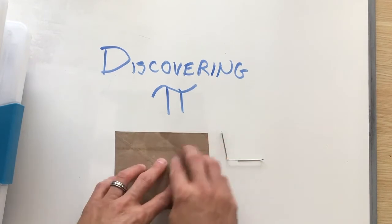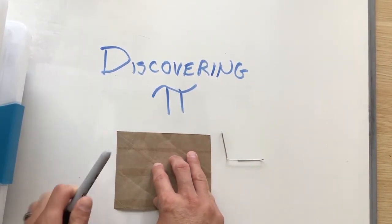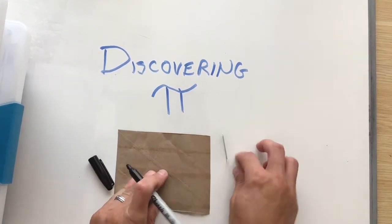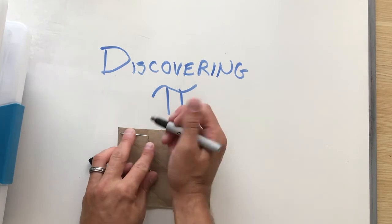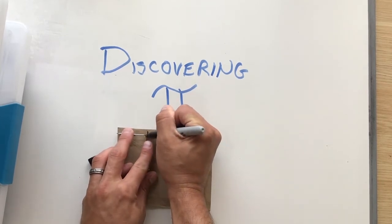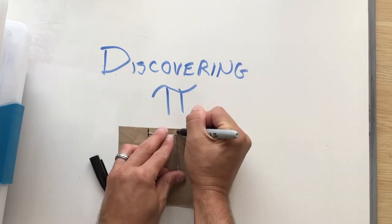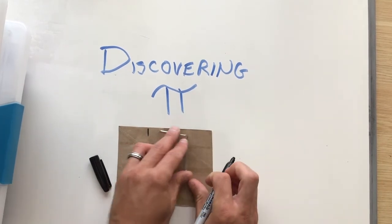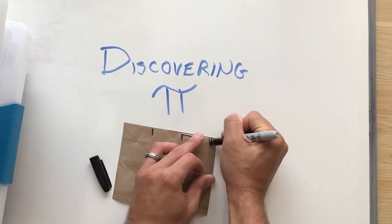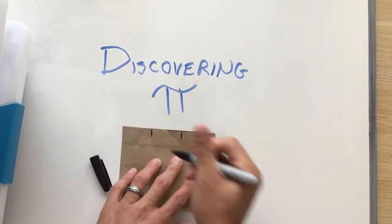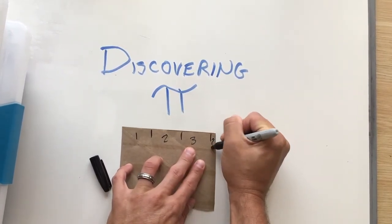And what we're going to do is we're going to measure how many diameters make up the circumference of the circle. So I'm going to take my paper clip and I am going to move it from edge to edge. So that is one diameter, that is two diameters, this is a third diameter, and then there's a little more. One, two, three, and a little more.